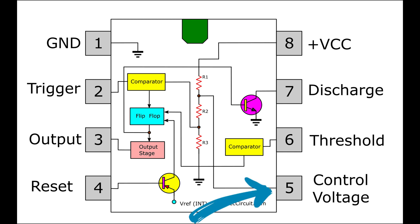Pin 5 is control voltage. This pin is used to control comparator thresholds, outputs 2/3 VCC, and allows bypass capacitor connection.